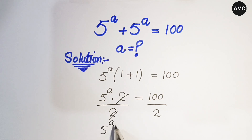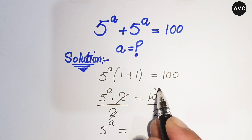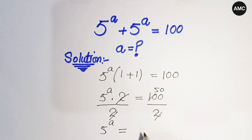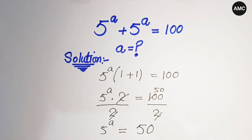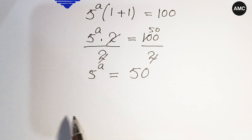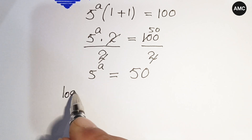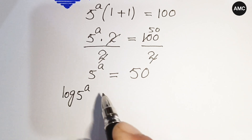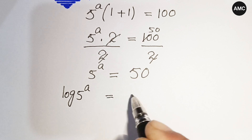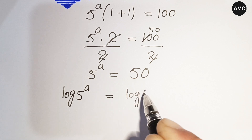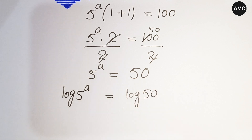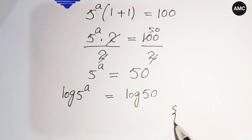We get 5 to the power a is equal to 50, since 2 fives are 10, so 100 divided by 2 is 50. Now taking log on both sides: log of 5 to the power a is equal to log 50.